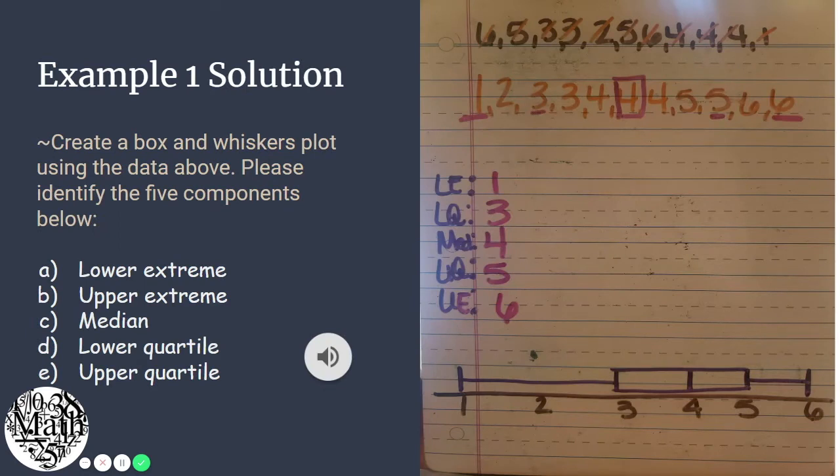Hi, and welcome to day two. We will now go over the example problems, starting with example number one, where you are supposed to create a box and whiskers or a box plot and identify the five main components. Using this set of data, we notice that we have 11 numbers that were given to us, so when we write them in ascending order, we are to make sure that we end up with the same number of points in our data set. In doing so, we can now identify the five main components, starting with our lower extreme, which is our lowest value, which is one.